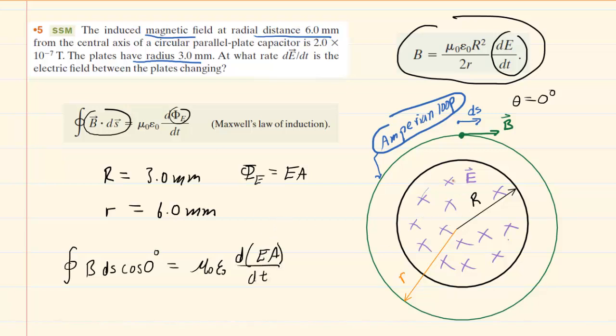The area of the plate isn't changing. It's a constant value. There's no reason to believe that the area of the circular plate would be changing. So we can actually factor out the area to the outside of that derivative. We can rewrite it as follows, and that leaves us with dE dt, which is the quantity that we seek to determine.